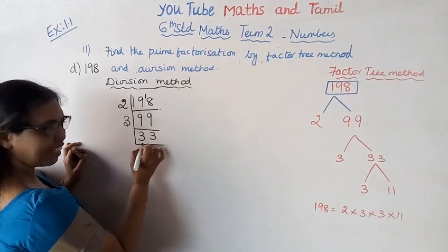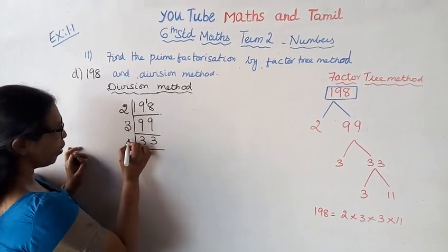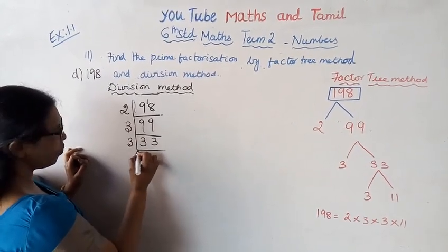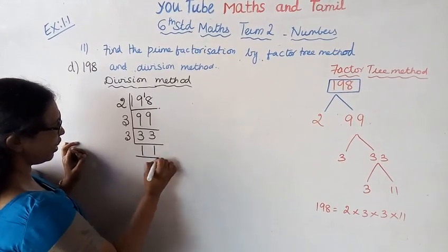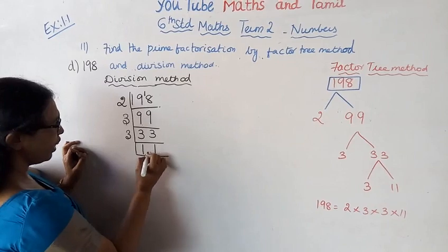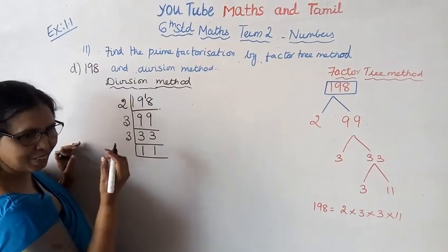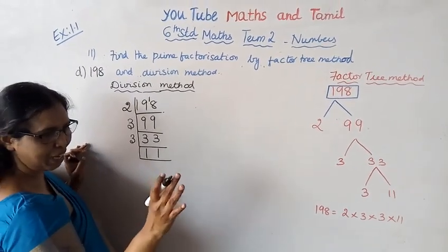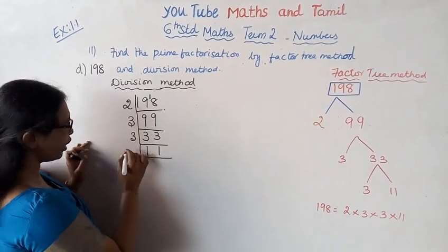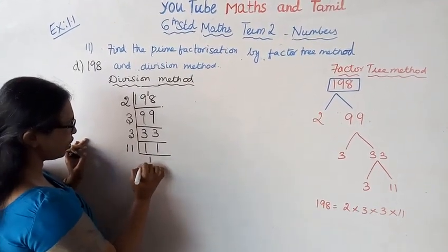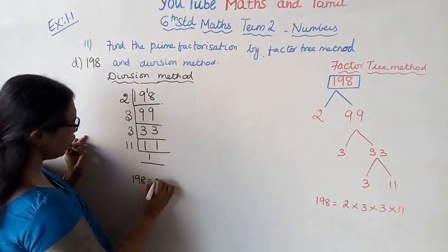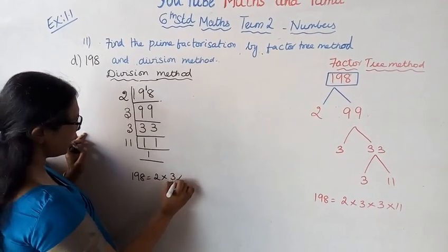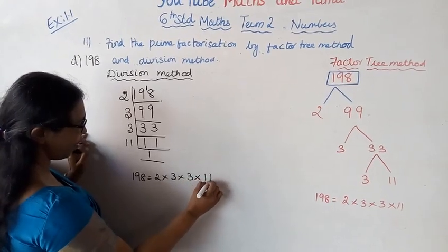Now 33. 33 is an odd number, so 3 divided by 3 is 1. 3, 11. 11 is a prime number, so we put 11. 11, 11 times 1.